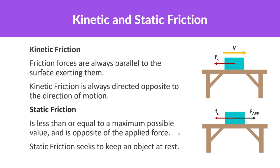Now let's learn more about kinetic and static friction. Kinetic friction forces are always parallel to the surface exerting them. So if an object is moving to the right, friction is going to be to the left — kinetic friction is always directed opposite to the direction of motion, trying to resist and slow down that motion.